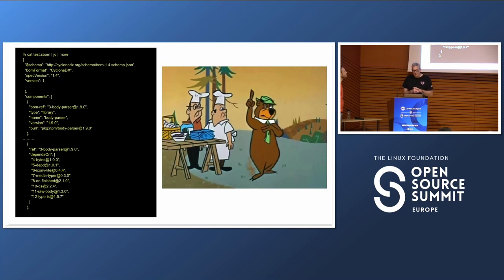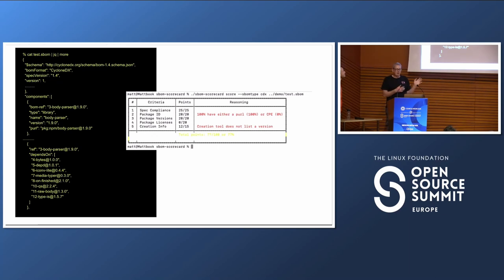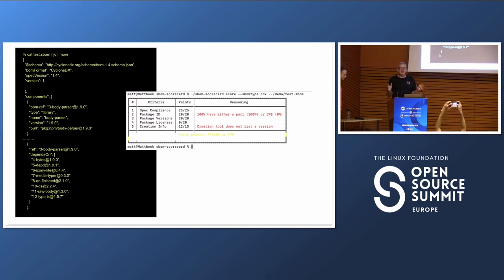If we take a quick look at an SBOM — this is an entirely correct one. It's a CycloneDX one and it fully meets the CycloneDX specification. We can see it contains information about libraries and then information about the dependencies for that particular package. But if we test this SBOM with SBOM Scorecard, the overall score is 77%. That's based mainly on the fact that there is no license information contained in this SBOM. There isn't a hard requirement in the spec for license information, but it's clearly seen as important because all of the quality testing tools score for it.